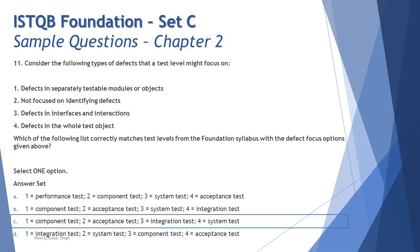With option 1 mapped to component testing, we can narrow down to options B and C. Defect type 2 — 'not focused on identifying defects' — maps to acceptance testing. Acceptance testing is primarily about verifying whether the system meets business or customer expectations, not about finding defects. The primary objective of alpha and beta testing is meeting customer and business expectations.